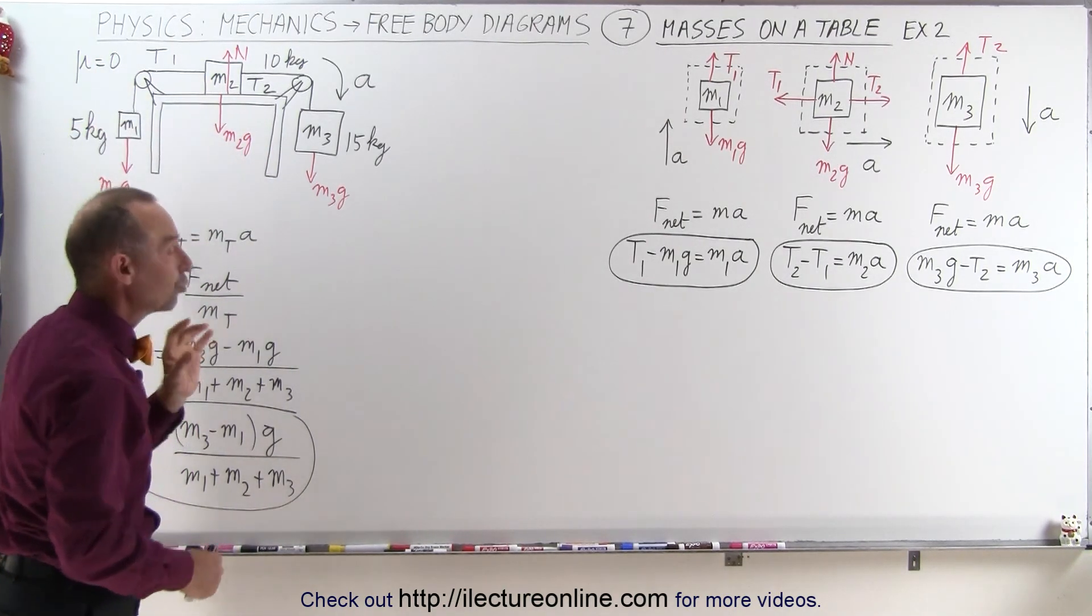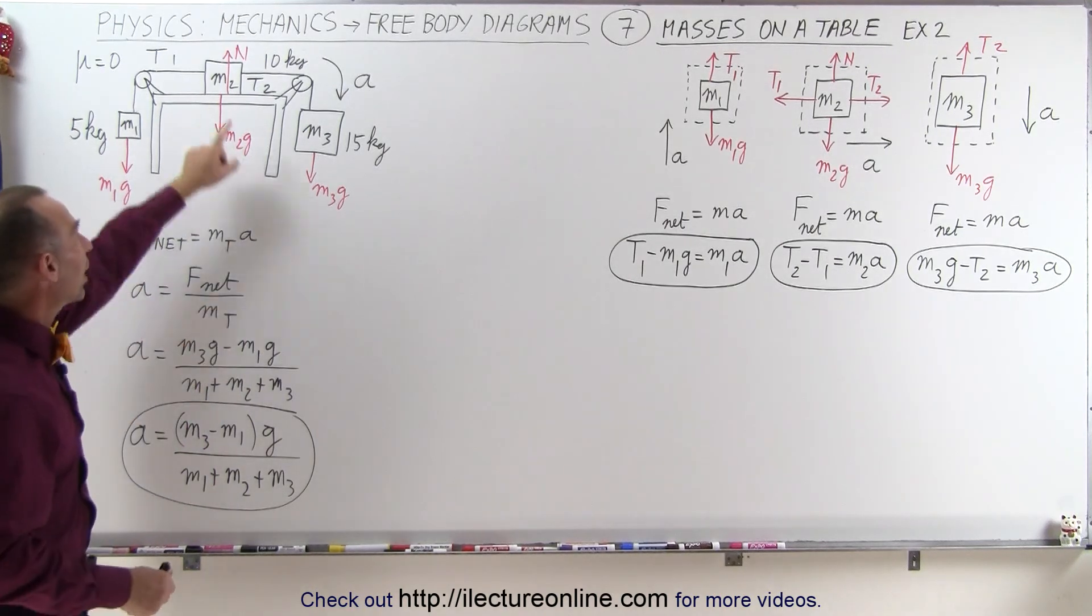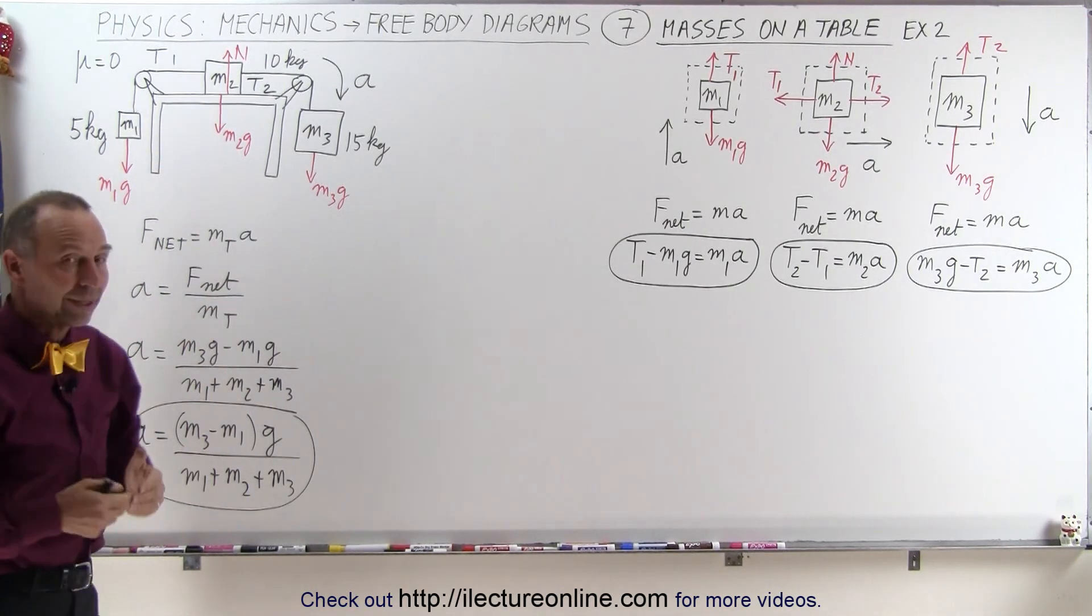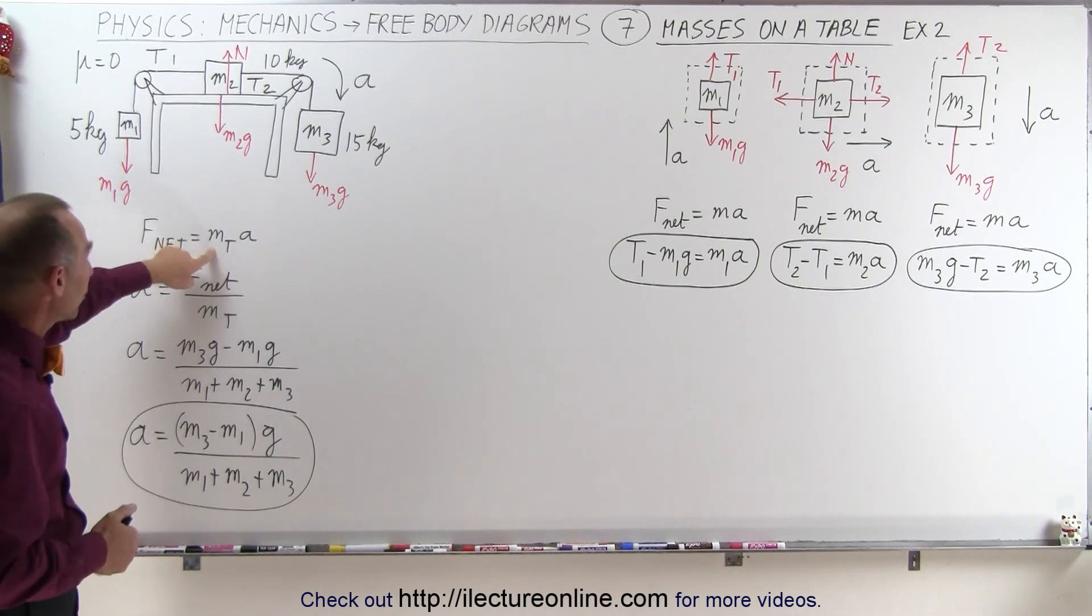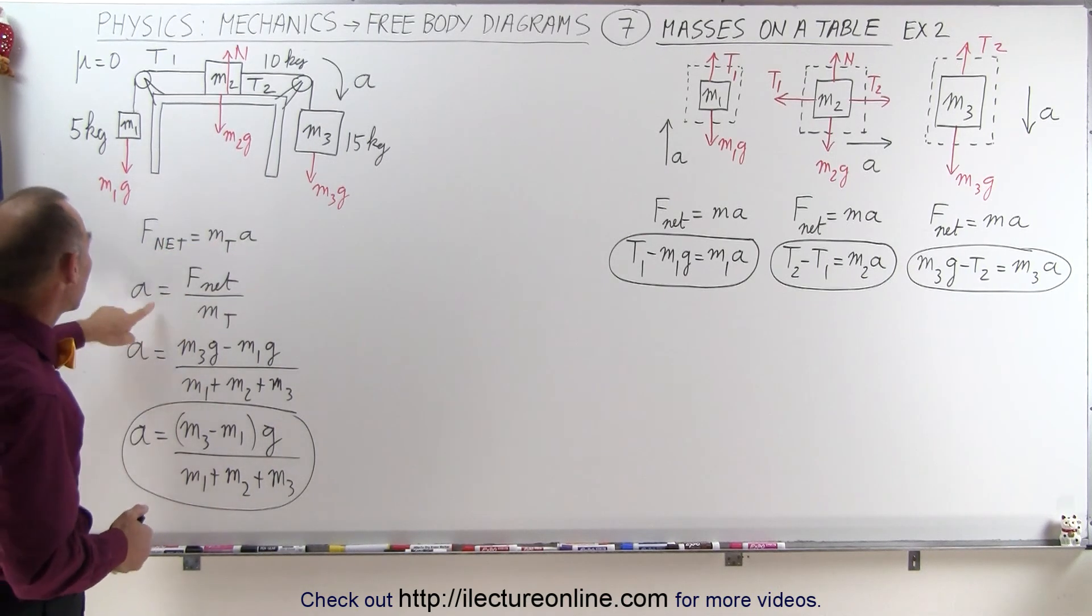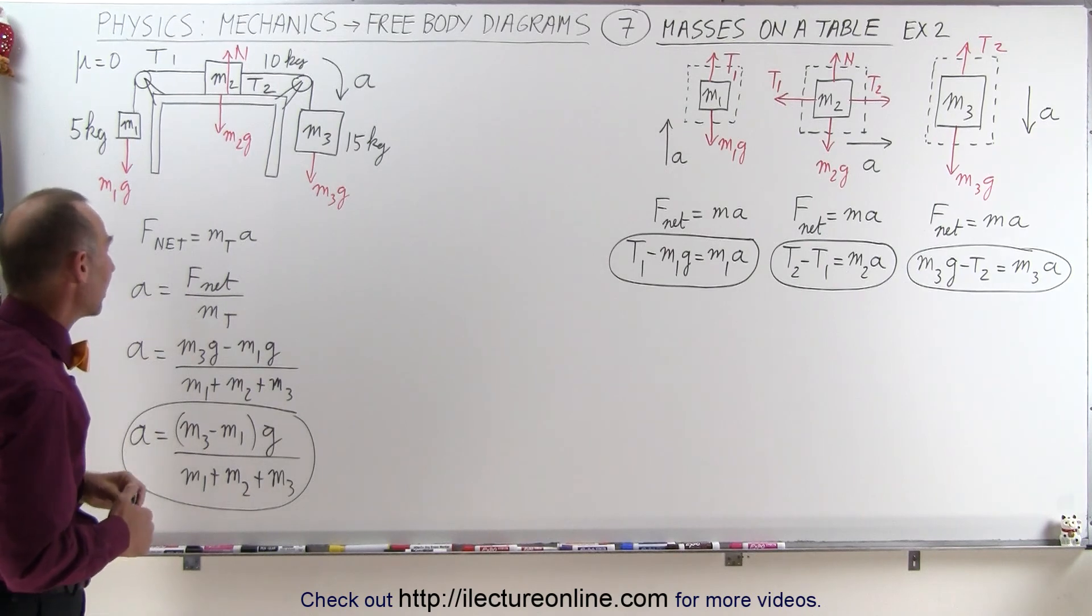In this case we're assuming that there's no friction between the block on the table and the surface of the table. So we can say that the net force equals the total mass times acceleration, or the acceleration equals the net force divided by the total mass.